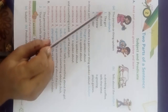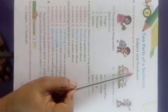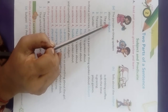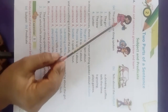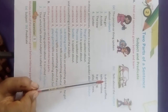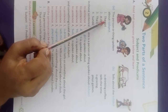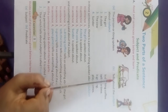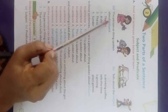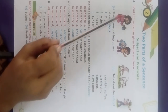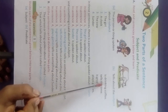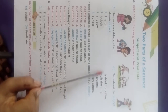Now, what is subject and what is predicate? The subject is the person or thing we are talking about. So 'the girl' is the subject, and 'is drinking coffee' is the predicate — it gives details about the subject.